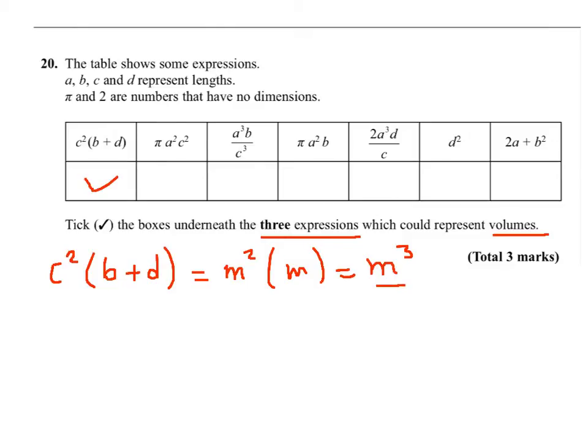If I look at the second expression, a squared would be meter squared, c squared would be meter squared, so m to the power 4, that is nonsense. The third one is a cubed b over c cubed, so I can simplify by cubic meter, I'm left with meter.